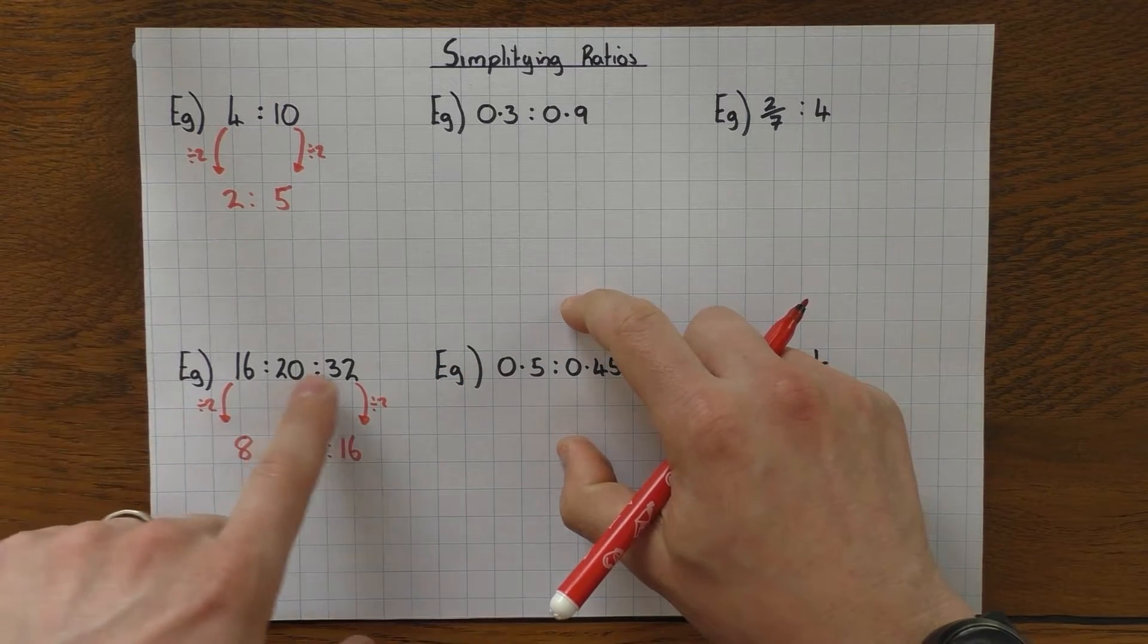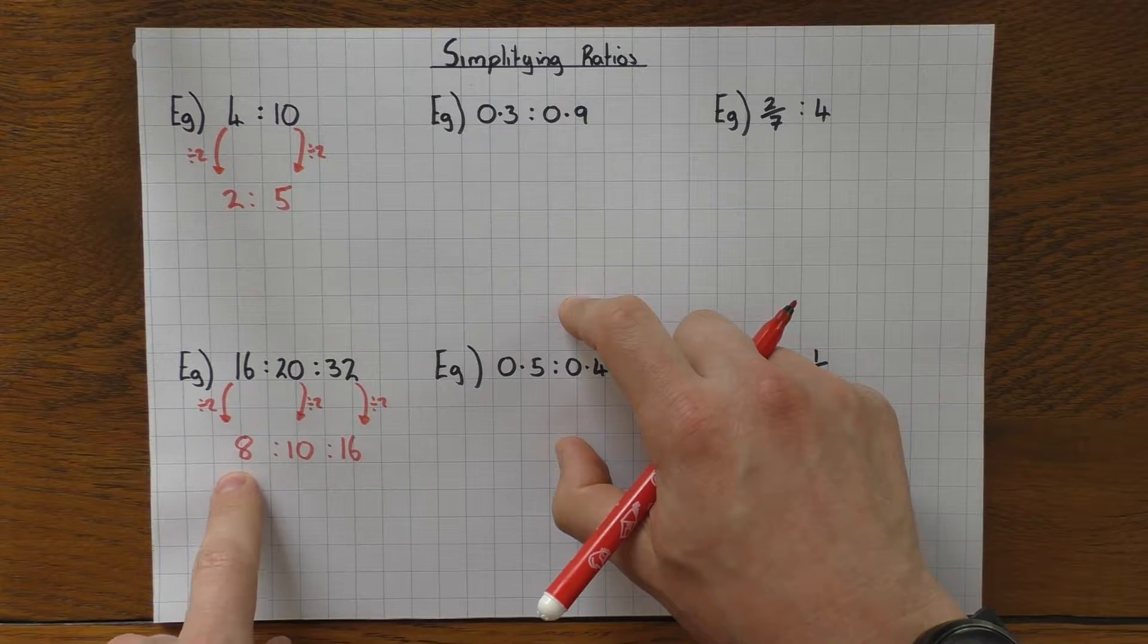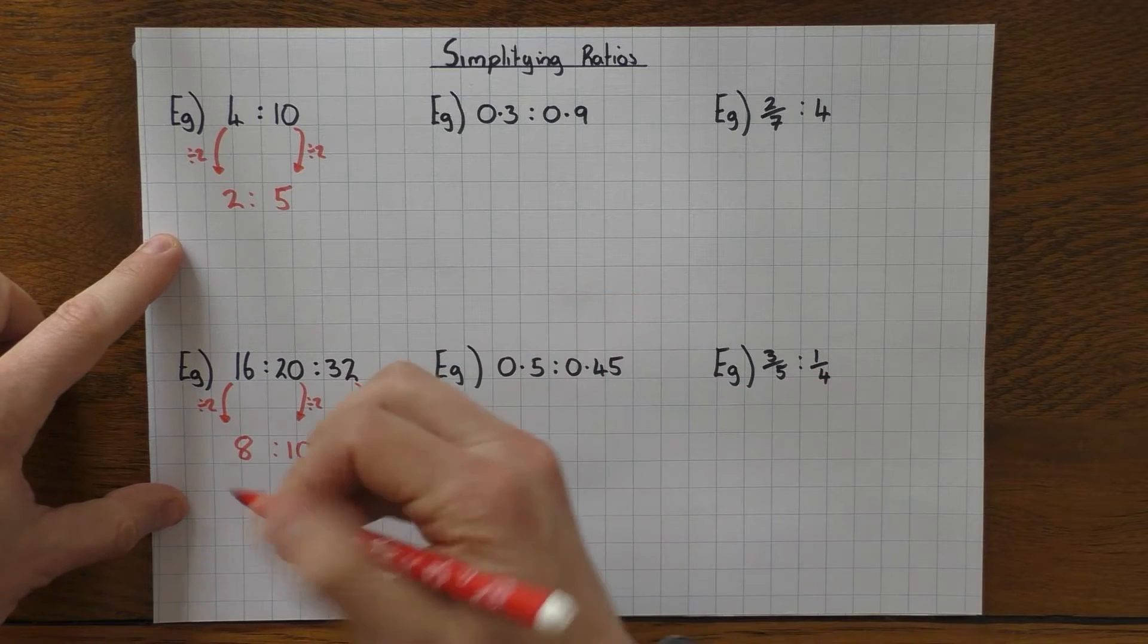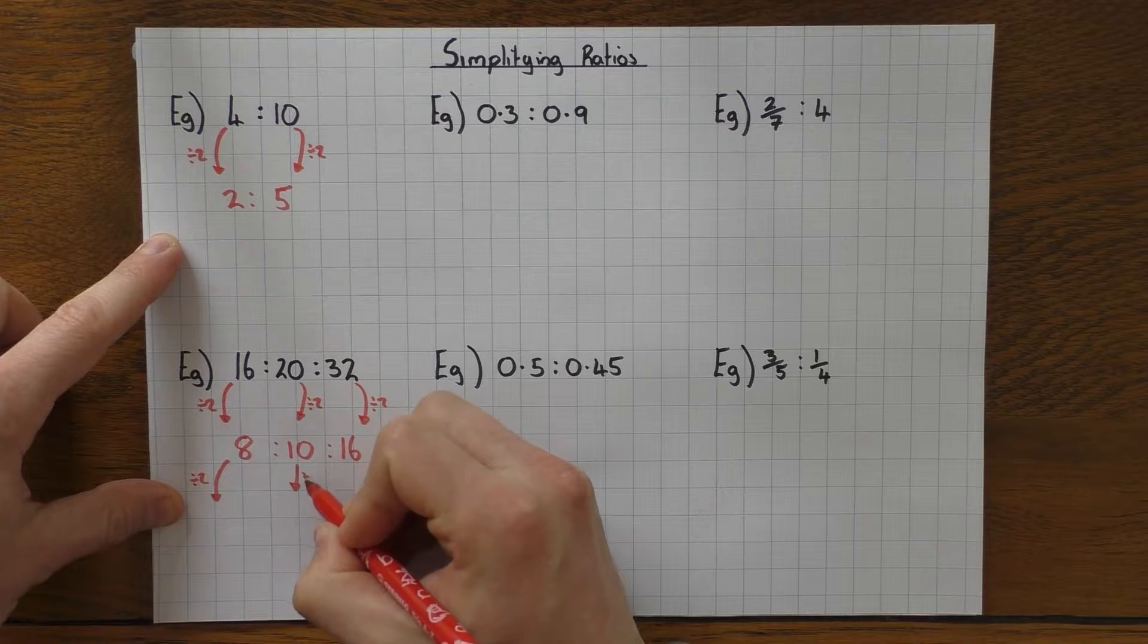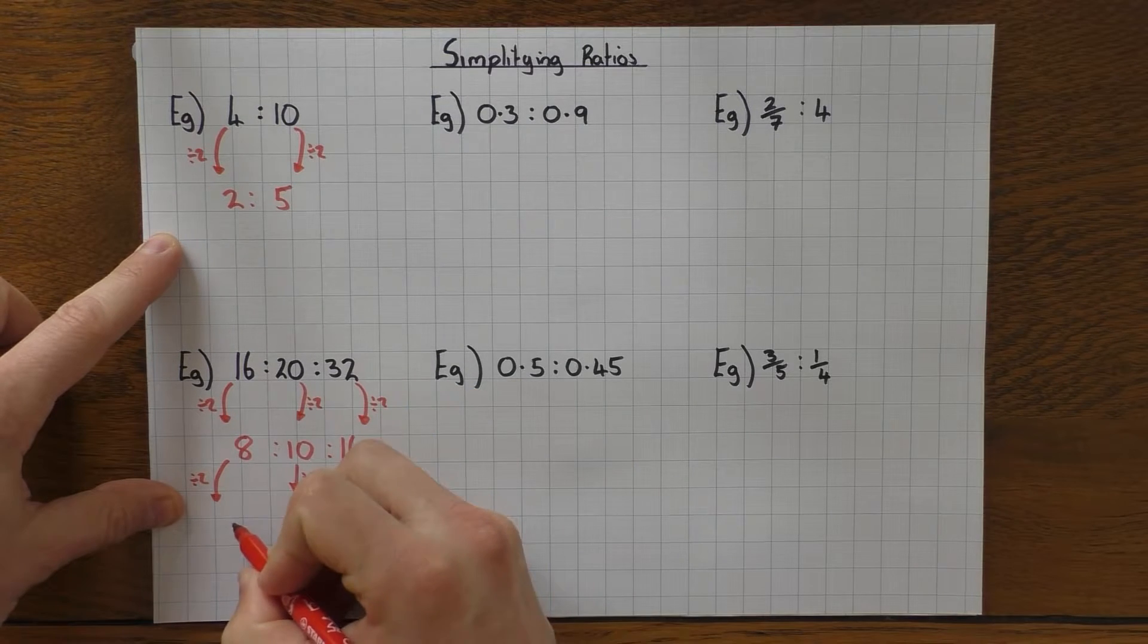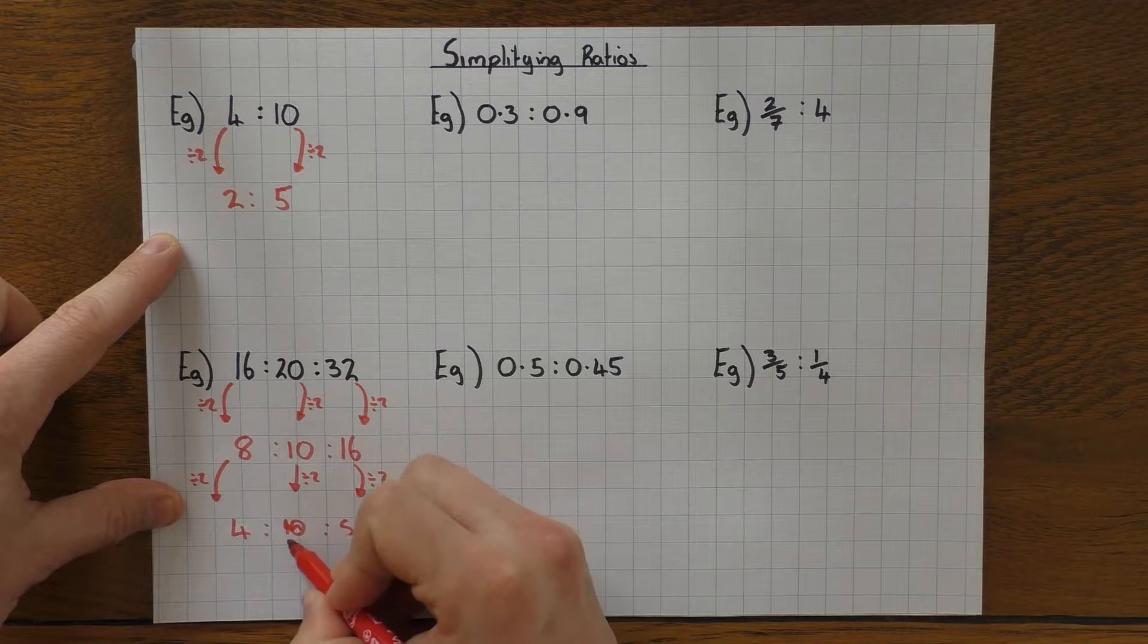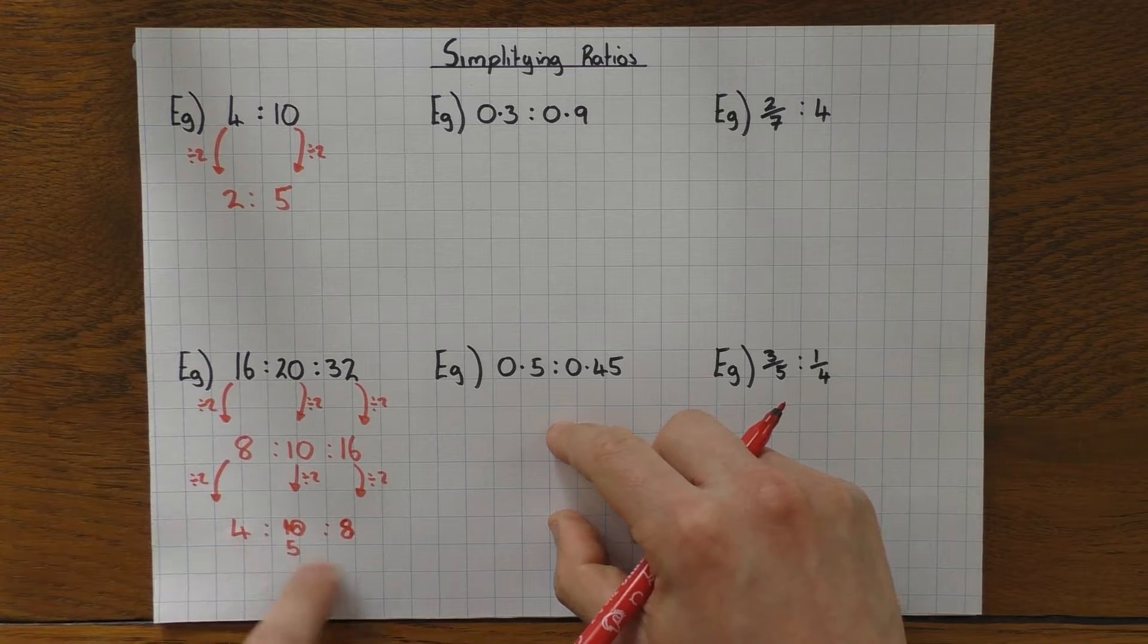So that's absolutely fine. 2 goes into all 3 of those numbers. Not a problem. But if you look here, 8, 10, and 16, there is a number that goes into 8, 10, and 16. Again, it's 2. We can half them again. So we divide by 2, divide by 2, and divide by 2. So that leaves me with 4 to 5 to 8.